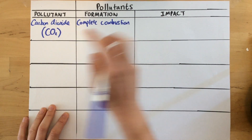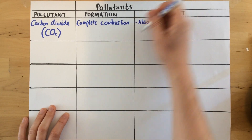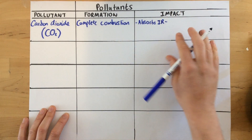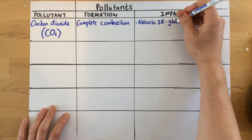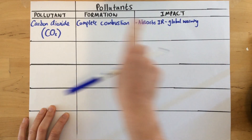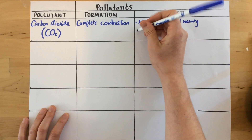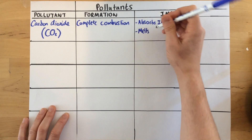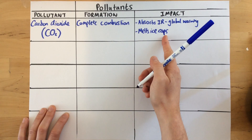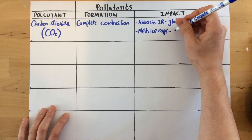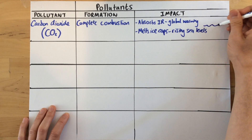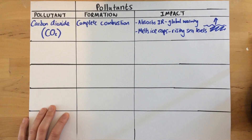The impact that carbon dioxide has is as follows. Because carbon dioxide is a greenhouse gas, it absorbs infrared radiation and this causes an increase in temperature — a phenomenon referred to as global warming. This causes the ice caps to melt, which is bad for animals in those regions such as polar bears, and it causes rising sea levels across the world, which can cause flooding.